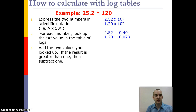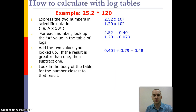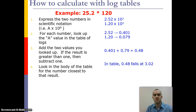If the result is greater than 1, you'd have to subtract 1 because that value has to remain within 1. Adding those two together gives 0.4800. The next thing is to take that value and look in the body of the table for the closest number to that result. Looking in the table, 0.4800 falls at 3.02 — so that becomes the new A value.